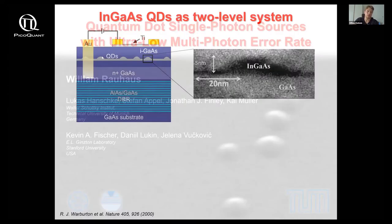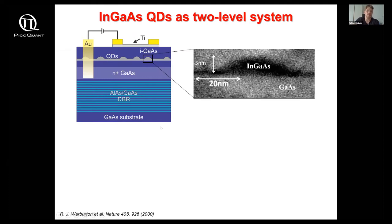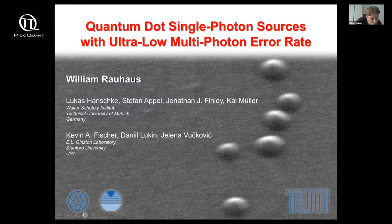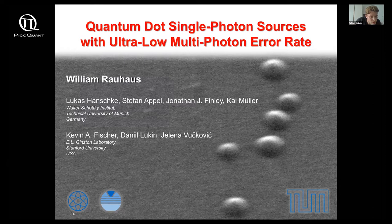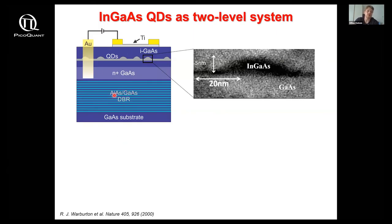I'm just going to quickly introduce the sample structures that we use. Below our quantum dots, in order to improve the light extraction efficiency, we have a distributed Bragg reflector consisting of several layers of aluminum arsenide and gallium arsenide. The critical thing here is that similar to what Matthias has just shown, we embed our quantum dot into the intrinsic region of a diode. However, in our case that's an N-I-Schottky diode, and what this does is it allows us to stabilize the electrical environment of our quantum dots.